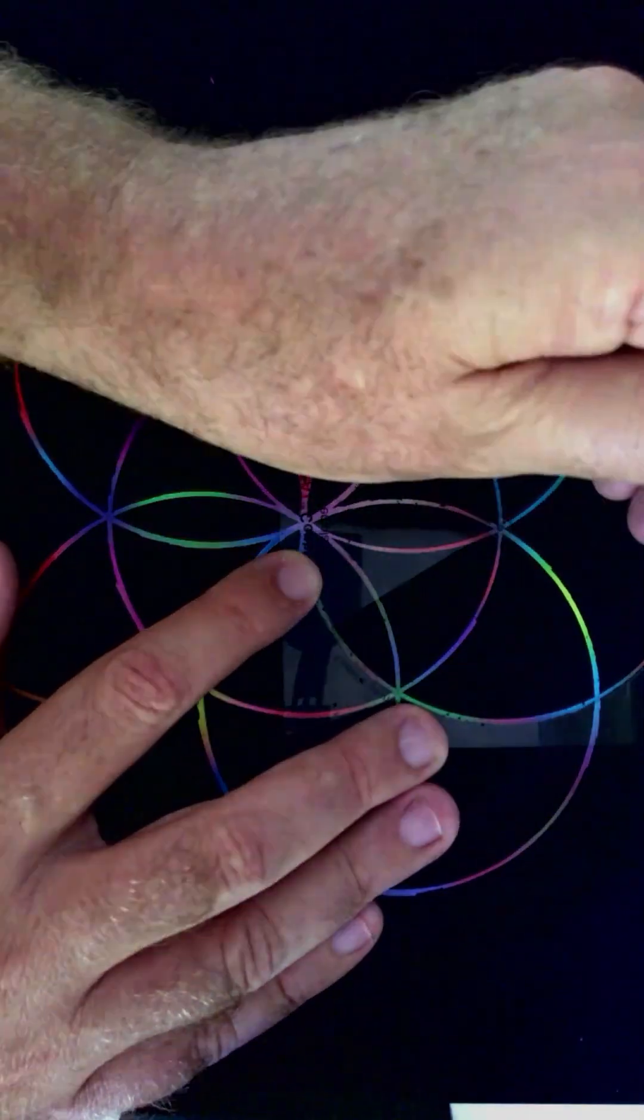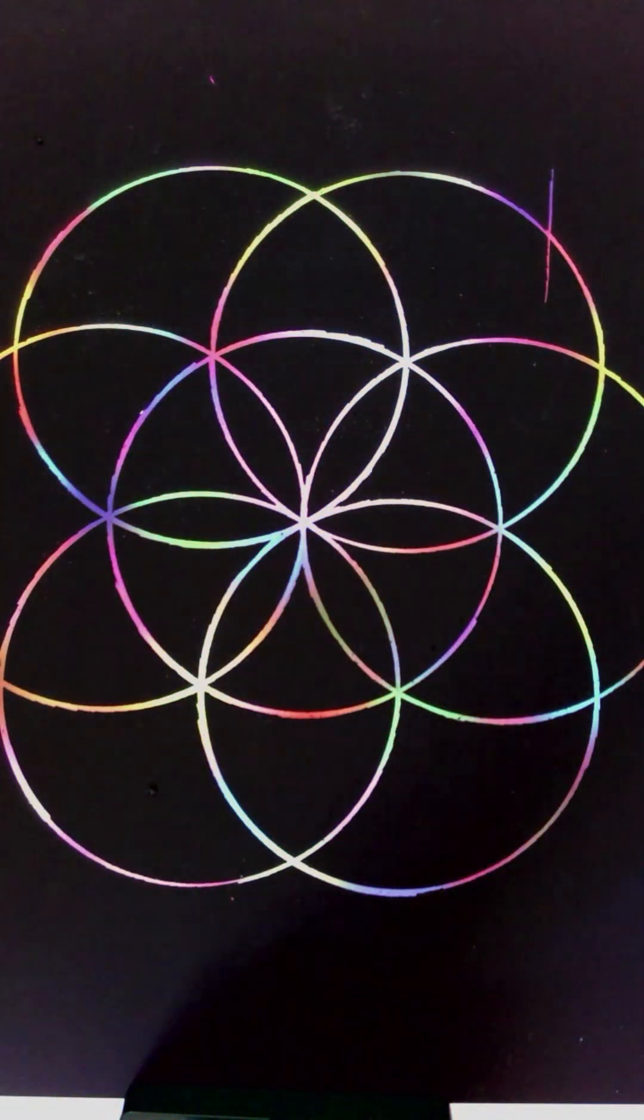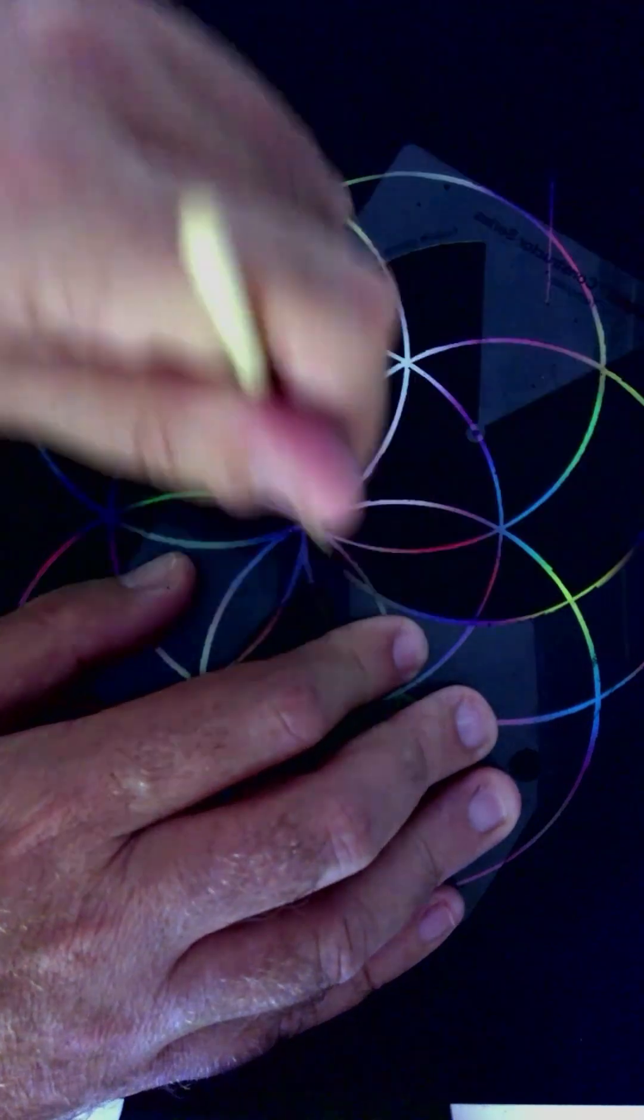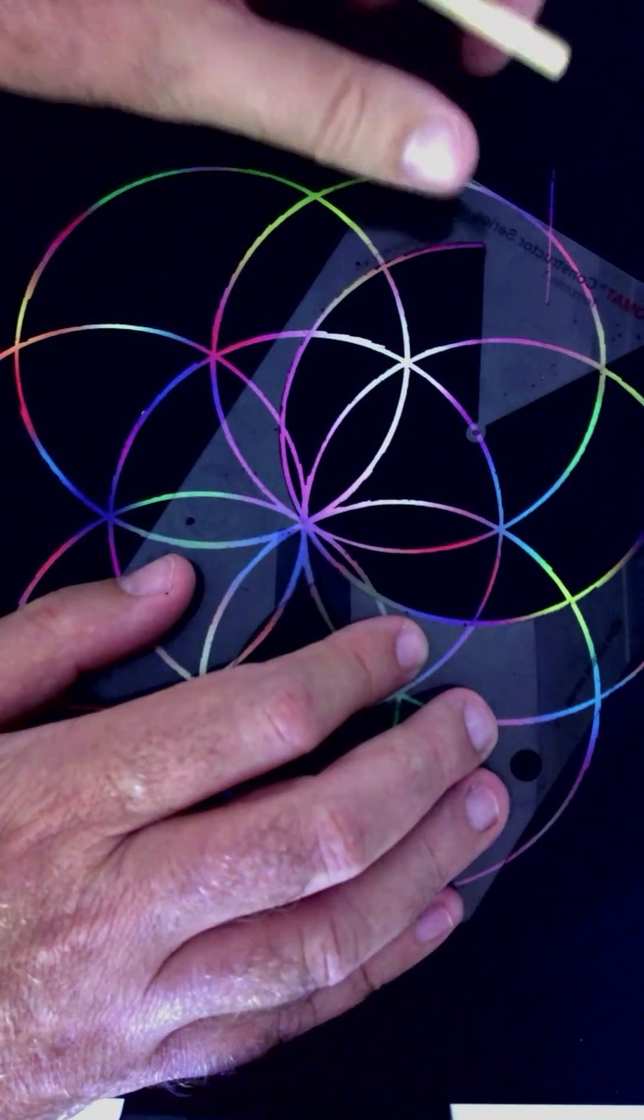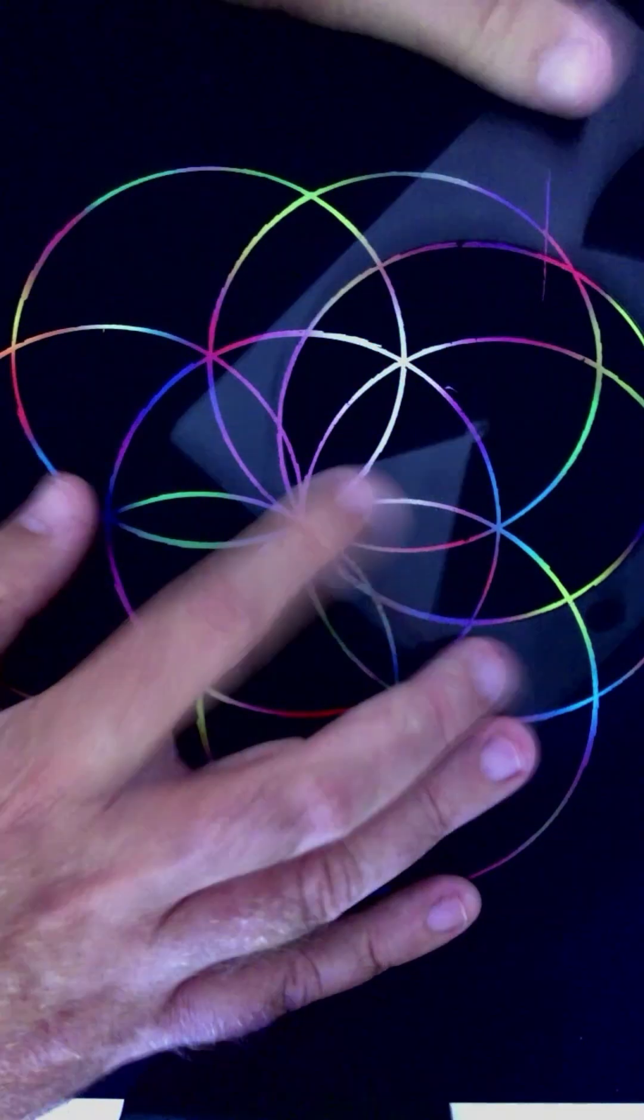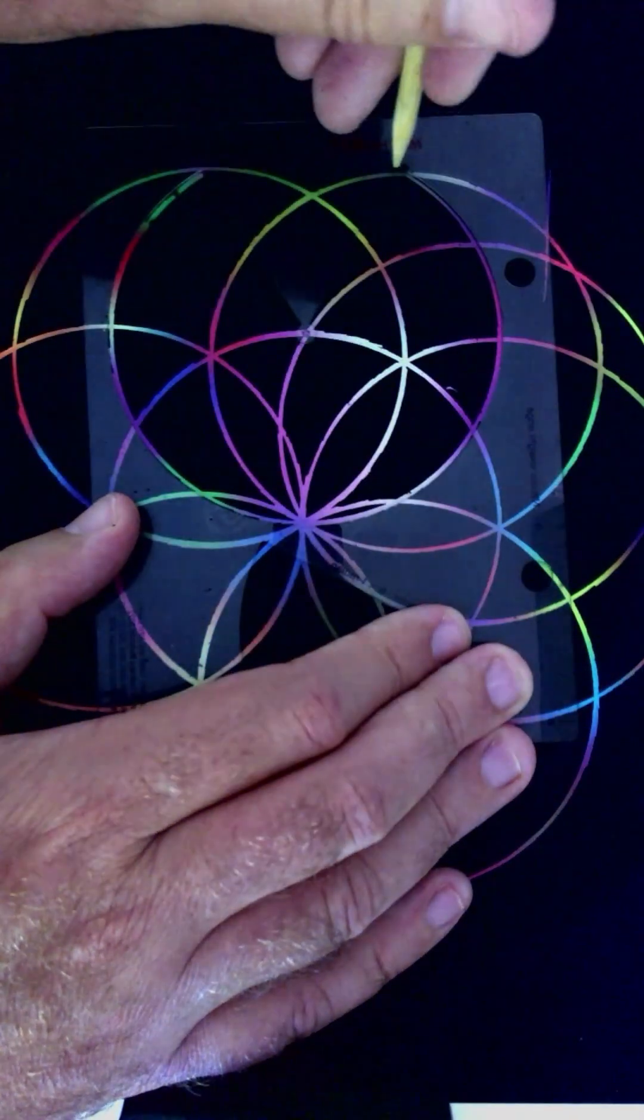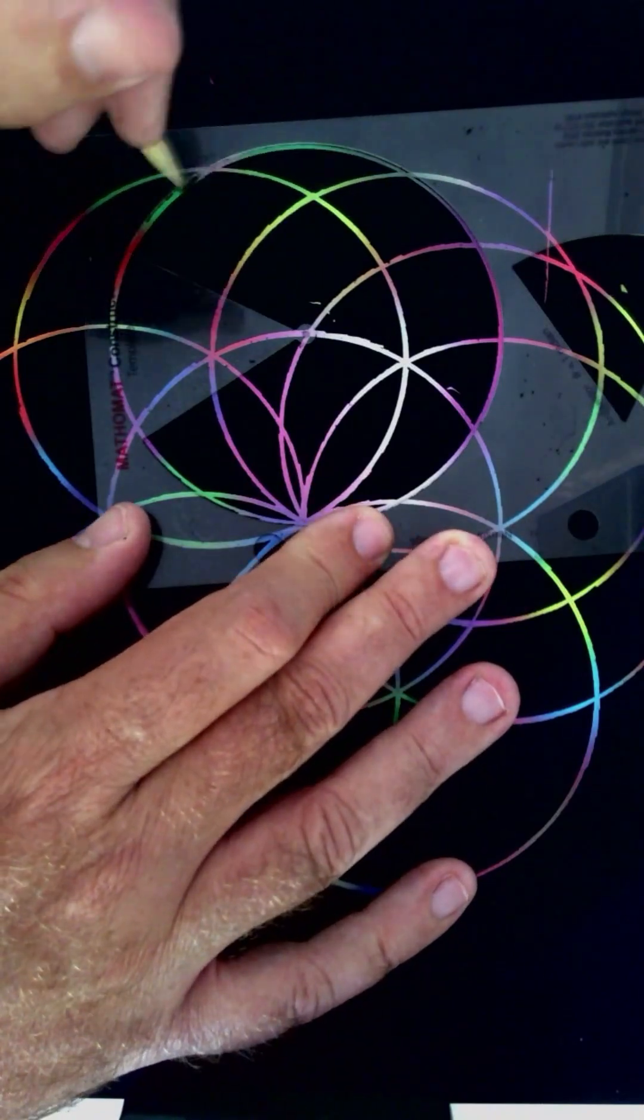Once all 12 points are marked, we'll begin forming the petals. Place the compass point on one mark and draw an arc that curves inward, connecting to the next mark. Repeat this process all the way around the circle. As you work, notice how each arc overlaps and weaves into the next. This is where the mandala starts to come alive.